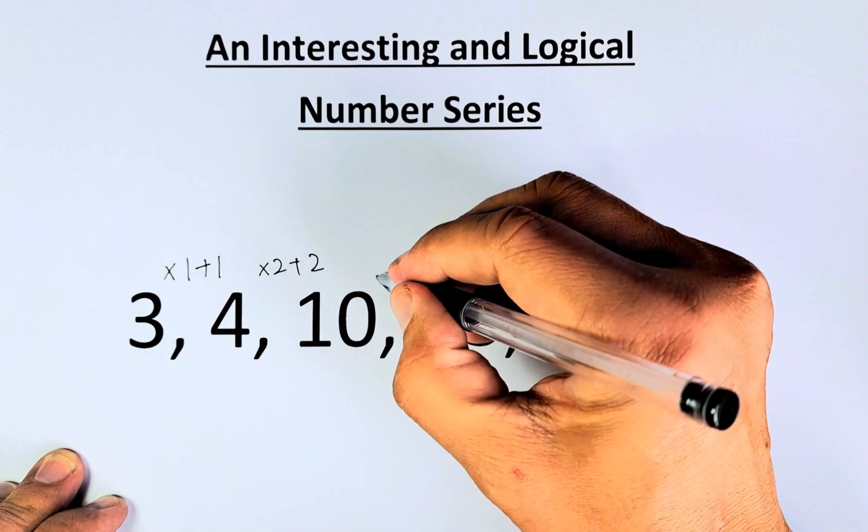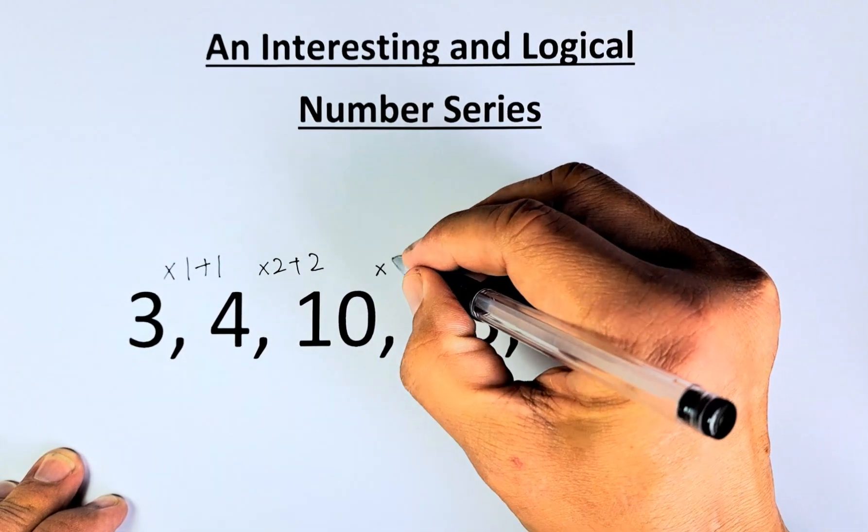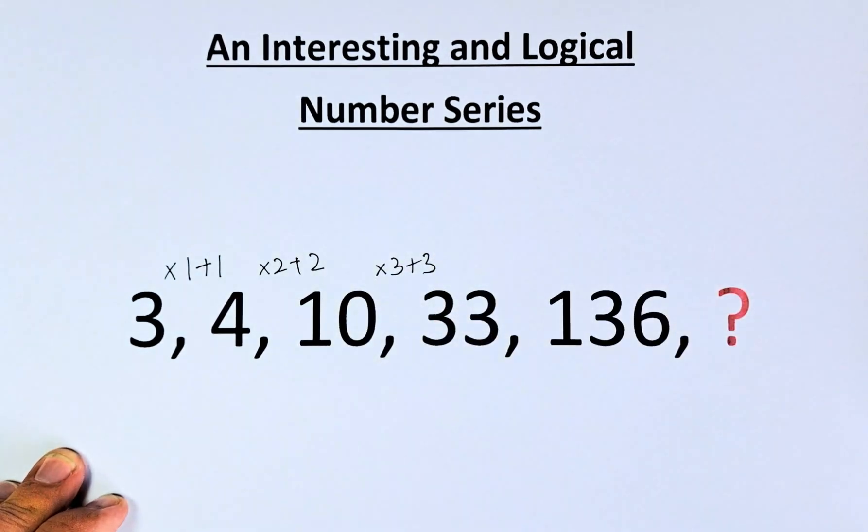And from 10 to 33, we do the same thing, the same pattern. Multiply by 3 and plus 3. 10 times 3 is 30. 30 plus 3 is going to be 33.